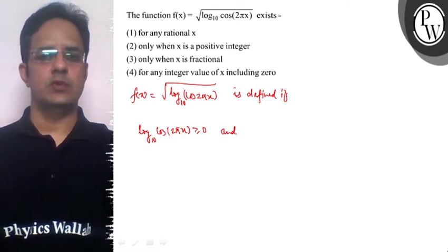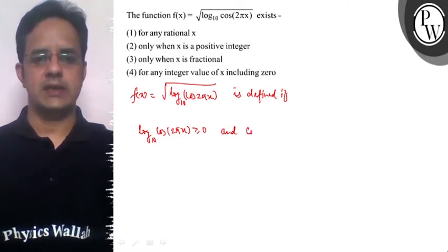for the logarithmic function, if we apply domain conditions, then cos(2πx) should be positive.